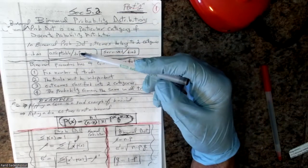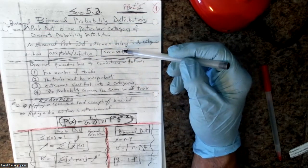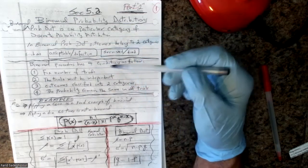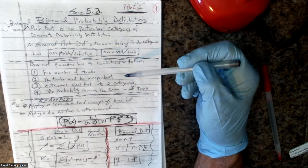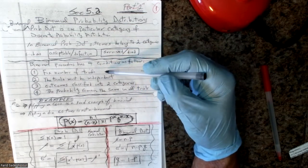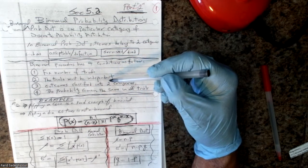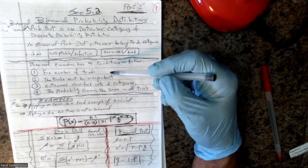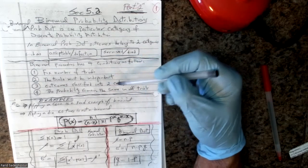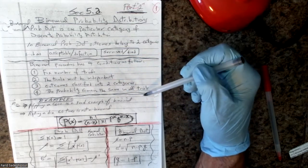Examples include acceptable or defective, survived or died. The binomial procedure has four conditions: fixed number of trials, trials must be independent — like when you flip a coin it's either tails or heads, or in the case of a baby it's boy or girl, so the trials are completely independent. The outcome is always two categories and probability remains the same in all trials.